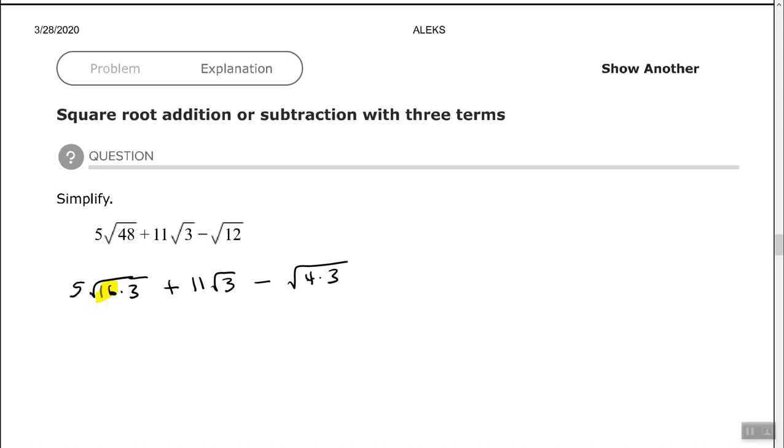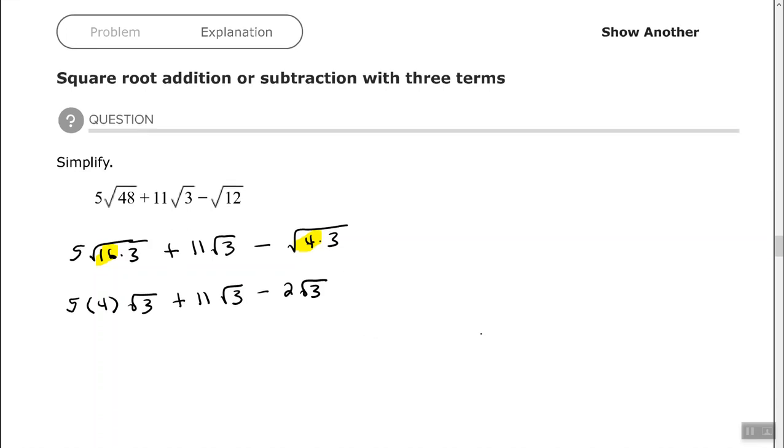Alright, so now I can simplify the square root of 16 and the square root of 4. So the square root of 16 is 4 with the square root of 3 left over. Square root of 4 is 2.